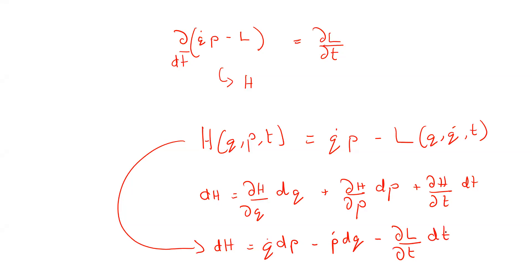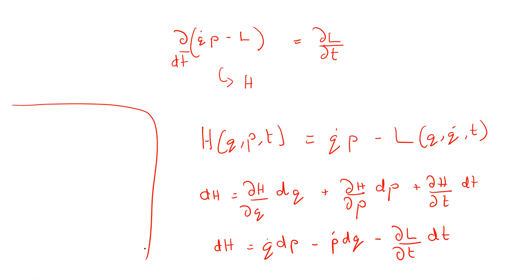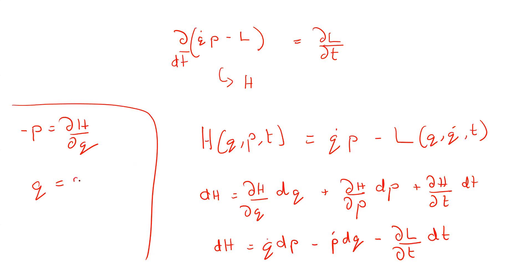This is what we have. Now we can compare these two equations with respect to each differential term. The term that has dQ is compared with the dQ term on the other side. Therefore, we get our first equation. Comparing the dQ terms, we get minus P-dot equals dH/dQ. Comparing the dP terms, we get Q-dot equals dH/dP. And comparing the dt terms, we get minus dL/dt.